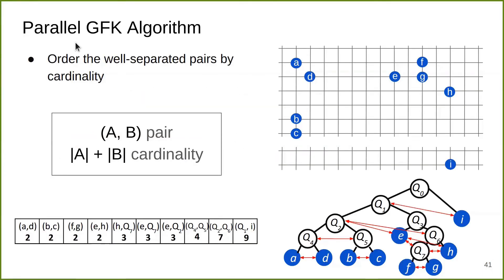Now, I'll explain the parallel GFK algorithm. Here's a notation for a well-separated pair, where on the first line, I show the two nodes involved in the pair. In the second line, I show the cardinality of the pair, which is the sum of the sizes of the two nodes involved. The first step of the algorithm is to order the well-separated pairs by the cardinalities, as shown here.